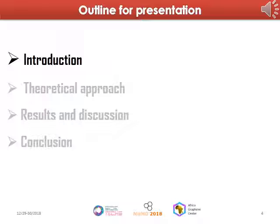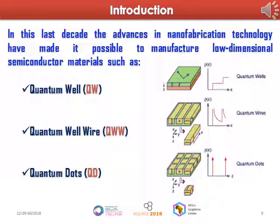Introduction. In this last decade, the advances in nanofabrication technology have made it possible to manufacture low-dimension semiconductor materials such as quantum wells, where the carriers of charge are confined in one direction and consequently free to move in two directions. The charge density is continuous and has the form of a step-off staircase. Quantum wires, where carriers of charge are confined in two directions, and quantum dots, where carriers of charge are confined in three directions. The density of charge is discontinuous while the energy levels are confined.